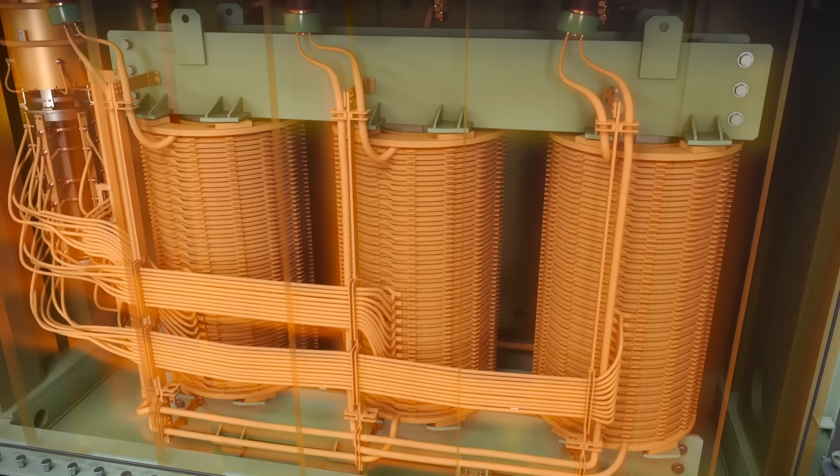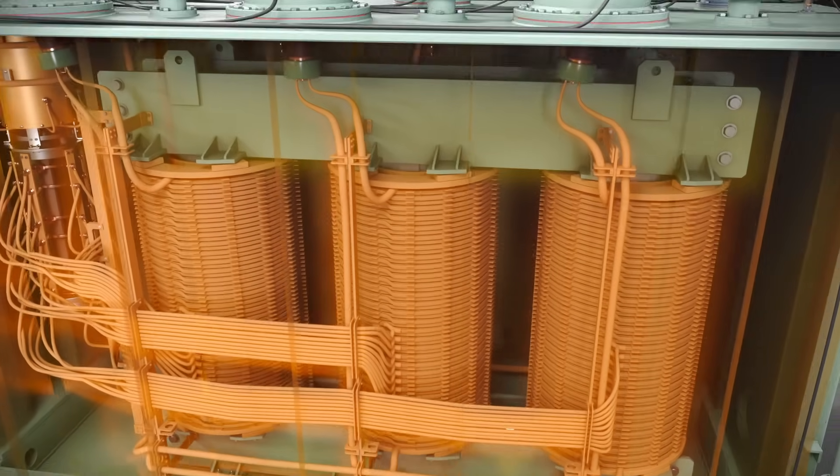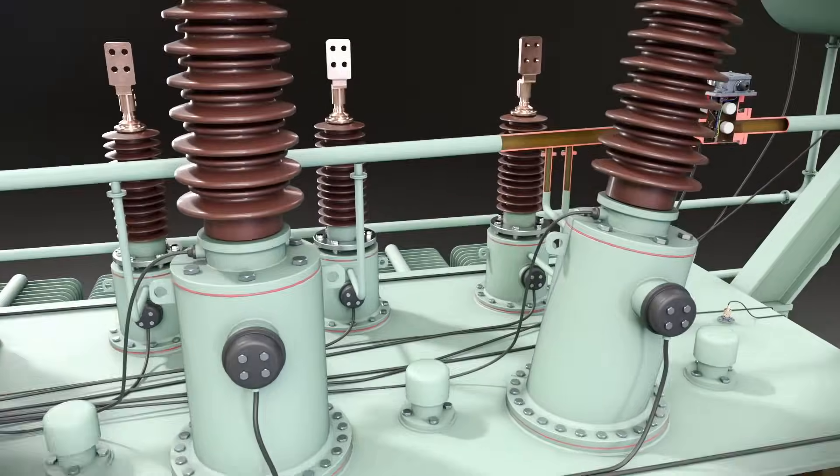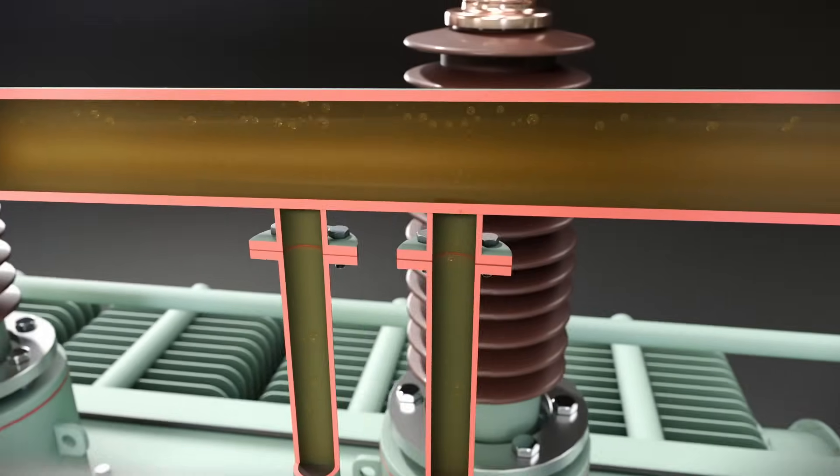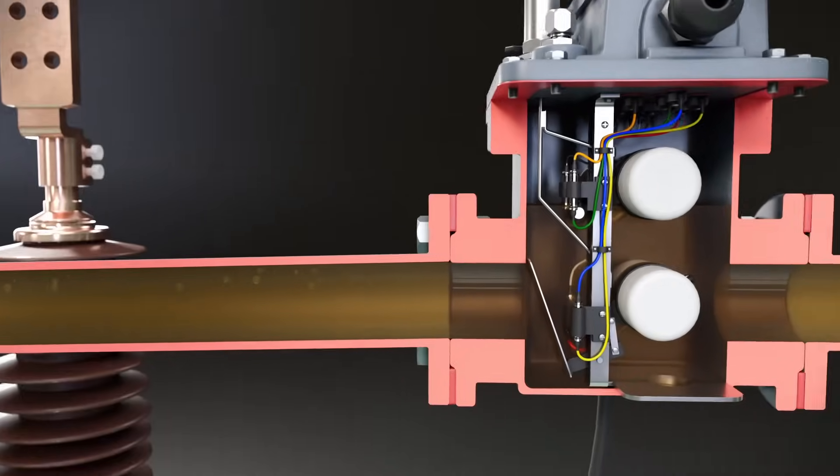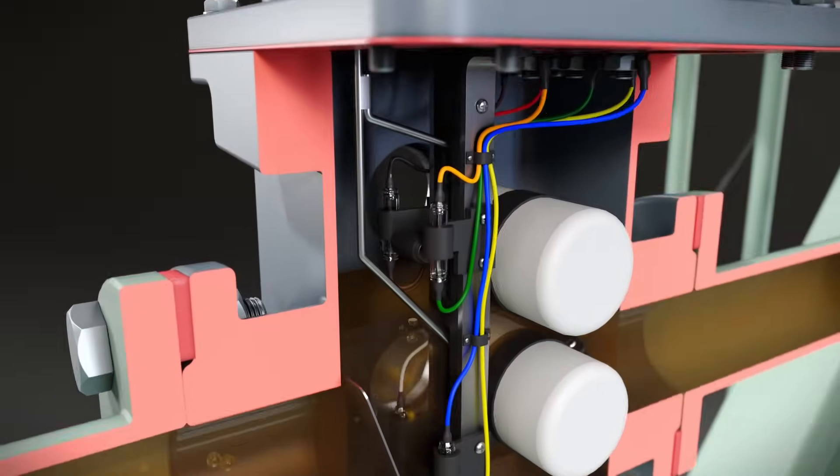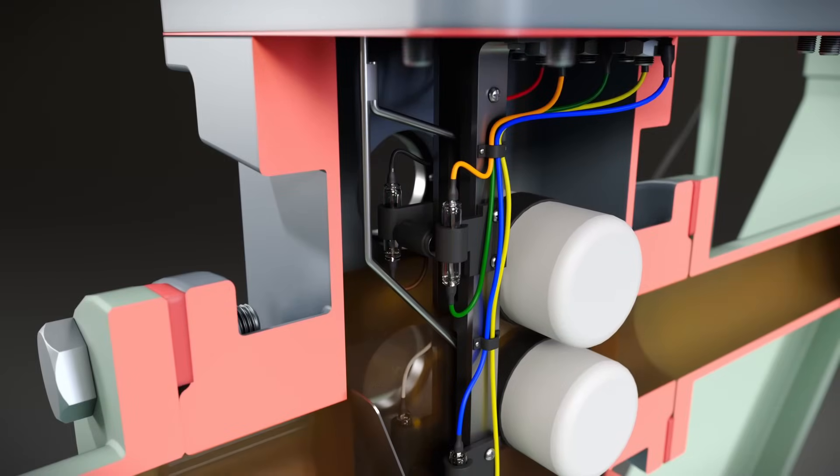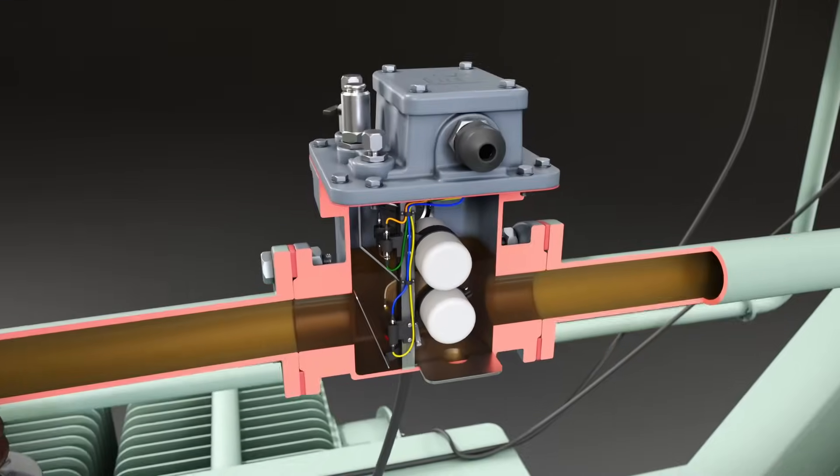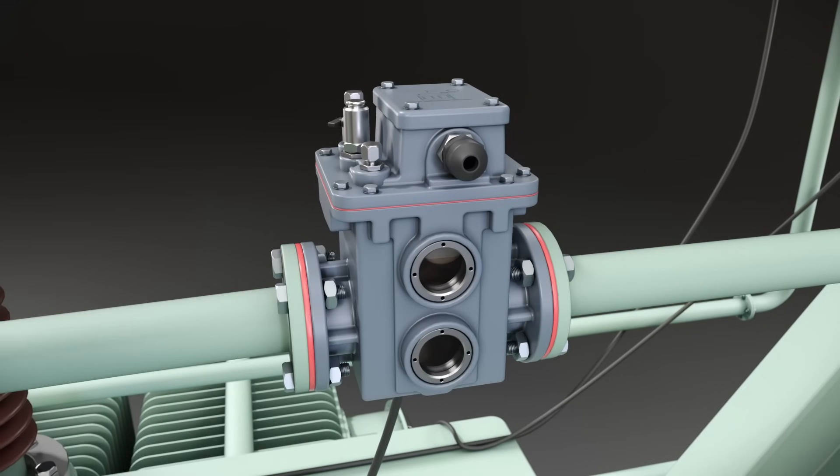When faults such as overloading, core overheating, or insulation breakdown occur in a transformer, they generate an abnormal amount of gas due to the excessive heat produced. Higher gas accumulation causes the oil level in the relay to drop. As a result, the upper float lowers and activates its magnetic switch, sending a signal that triggers an alarm to indicate a potential issue within the transformer.